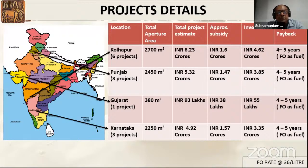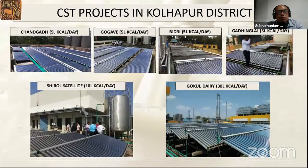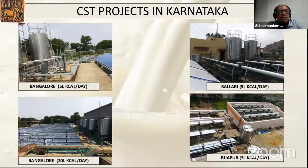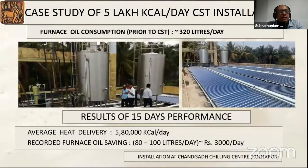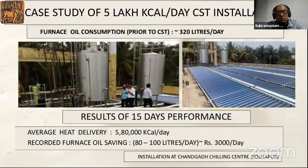Six project installations were in Kolhapur covering 2,700 square meters aperture area, three in Punjab, one in Gujarat, and three in Karnataka. Photos show installations at chilling centers and at the dairy itself — the top four photos are from chilling centers, the bottom two from the dairy. Installations also include Bangalore, Ballari, Bijapur, and Punjab locations: Mohali, Jalandhar, Ludhiana.